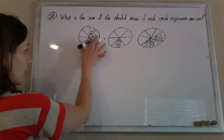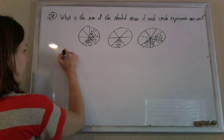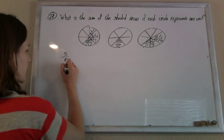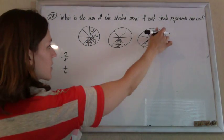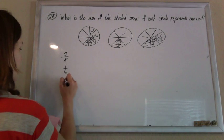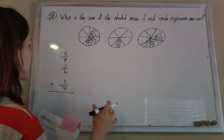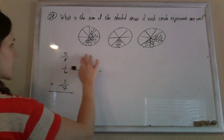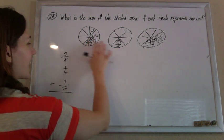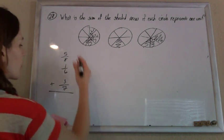Alright, so basically for this one we're adding fractions. For the first one that's 5/8, this guy is 1 out of 6, and this guy is 3 out of 7. Clearly all those circles are the same size. So 5 out of 8, 1 out of 6, 3 out of 7. I'm going to add these.